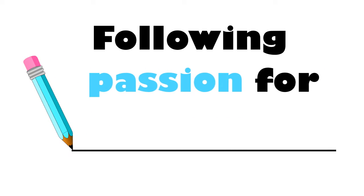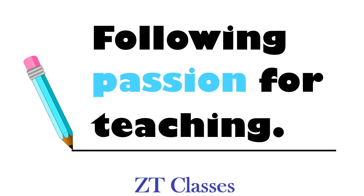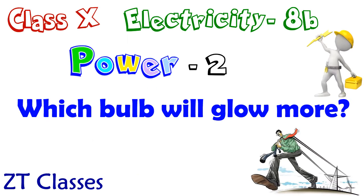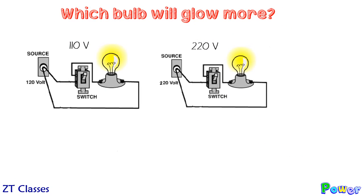Hello everyone, I am Deepak Gupta, welcome to ZT Classes. Today's lecture we'll find out when two bulbs are connected in series, which bulb glows more — the one with higher power rating or lower power rating. This is the next concept where the question is given about bulbs connected in series or in parallel, and you have to find which bulb will glow more.